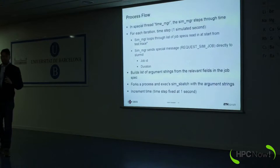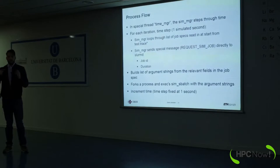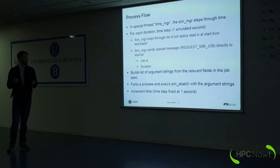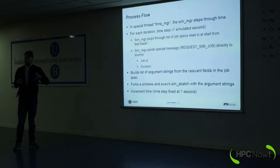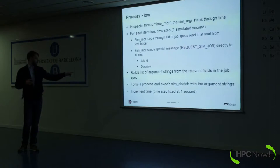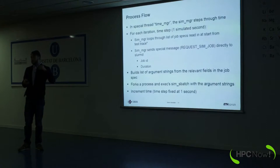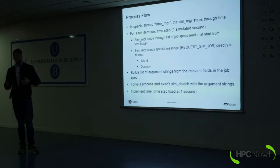When a job finishes, SlurmdBD sends the normal message back to the controller — there are no other special messages; the special message is only when you start a simulated job. Inside the SimManager, the most important thread is called TimeManager. It iterates through the list of all events, ordered by time, every second. The SimManager loops through the list of job specs, sends a special message to the Slurm daemon with the job ID and duration, creates a list of arguments from the trace file, and uses the Slurm API to submit the job. Then it increments time — this is how the simulator speeds up time.